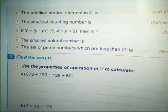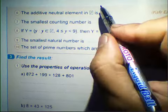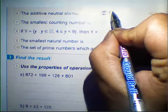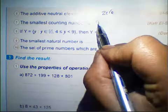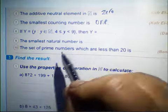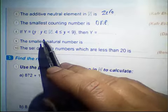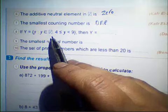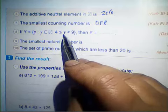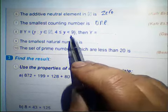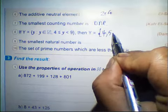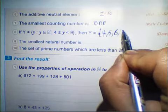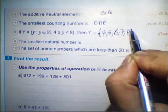The additive identity element in N is 0. The smallest counting number is 1. If Y equals the set of y such that y belongs to the natural numbers, y is greater than or equal to 4 and less than 9, then Y will be 4, 5, 6, 7, and 8.